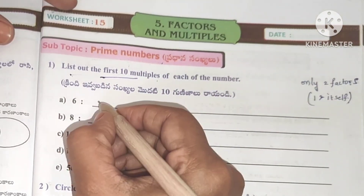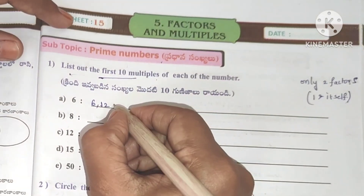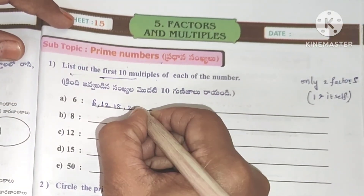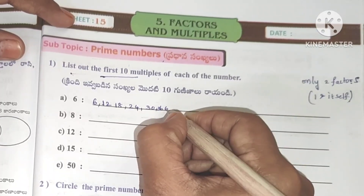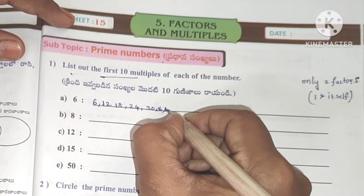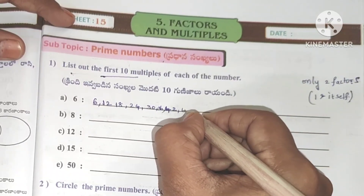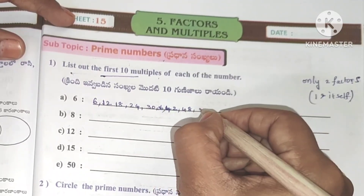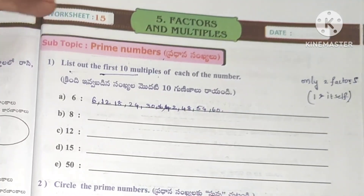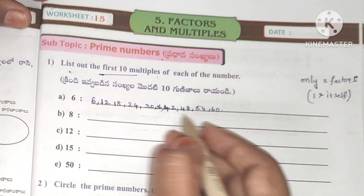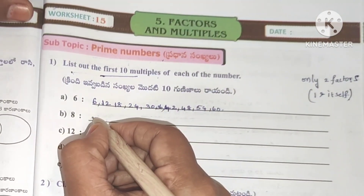For number 6: 6×1=6, 6×2=12, 6×3=18, 6×4=24, 6×5=30, 6×6=36, 6×7=42, 6×8=48, 6×9=54, 6×10=60.